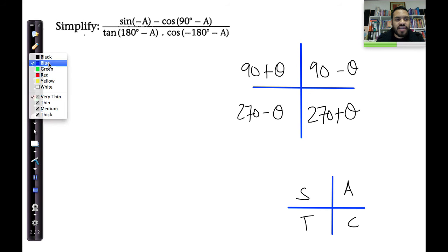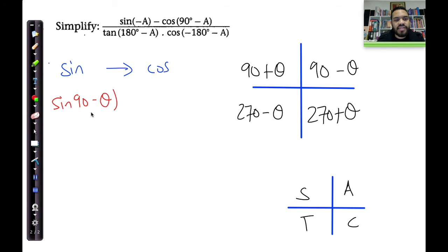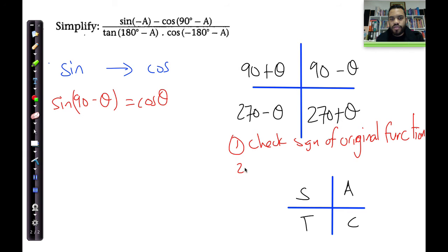So, co-ratios. The co-ratio of sine is cos. These are the co-ratios that I'm talking about, sine and cos. So if, for example, I have sine of 90 minus theta, this is an identity, and it says that's actually equal to cos of theta. Now, there's two things you need to do when you work with co-ratios. Number one is check the sign of original function. And then number two is you then change to the co-ratio.